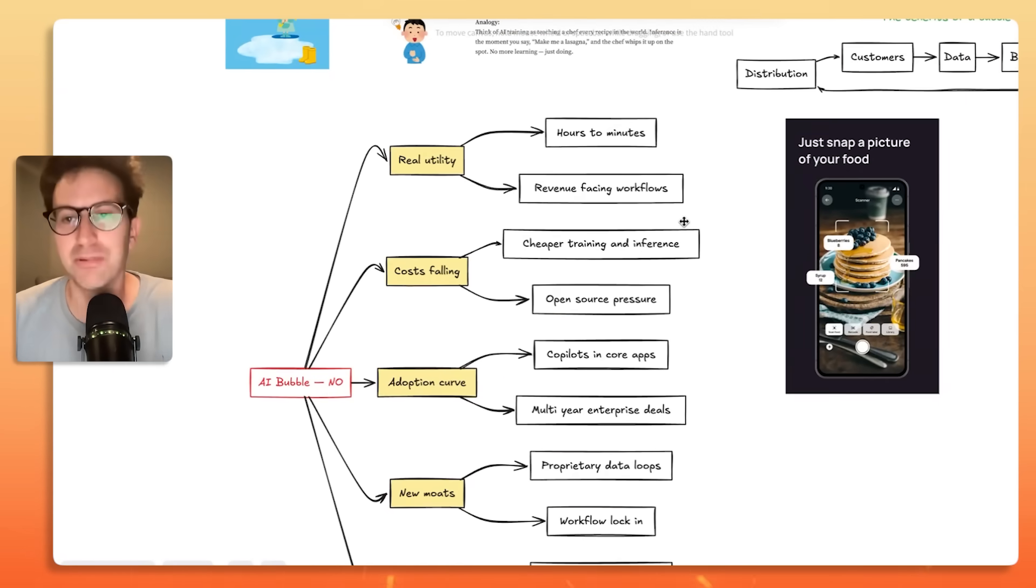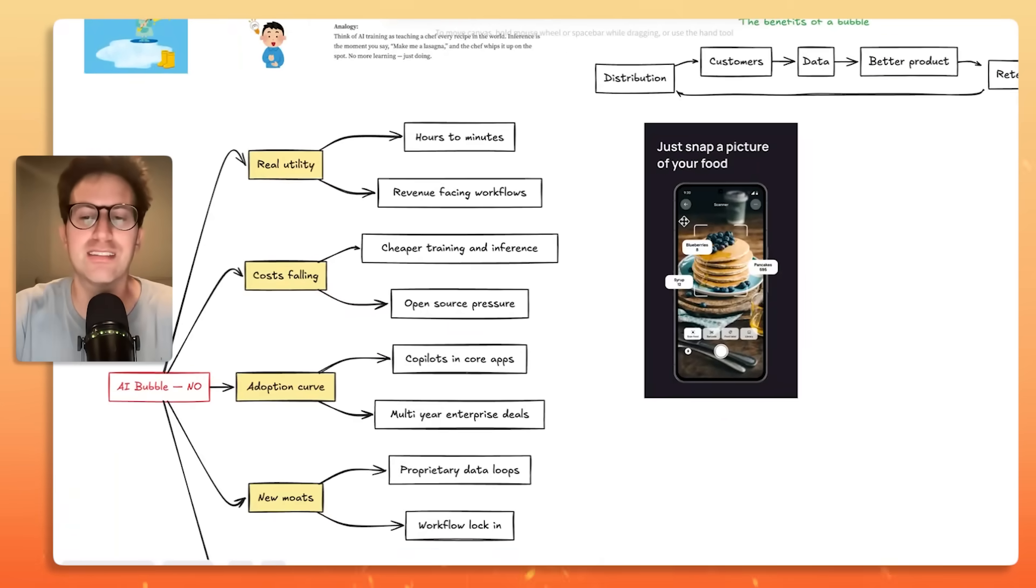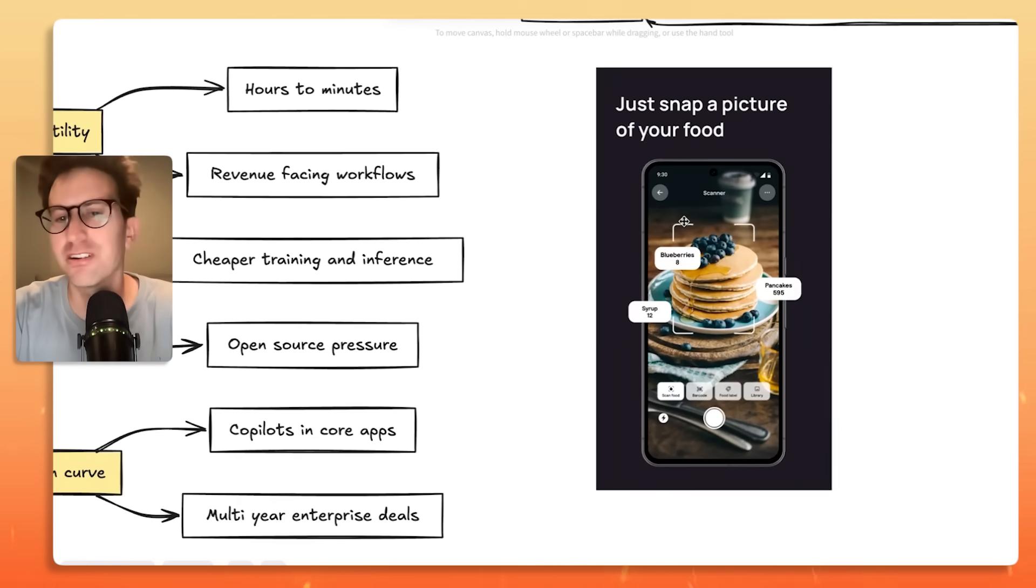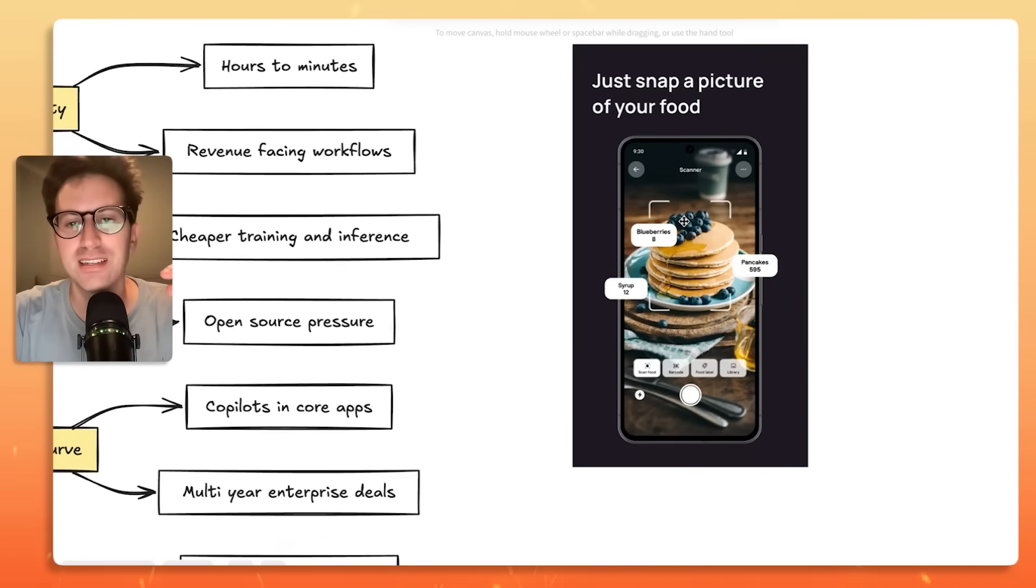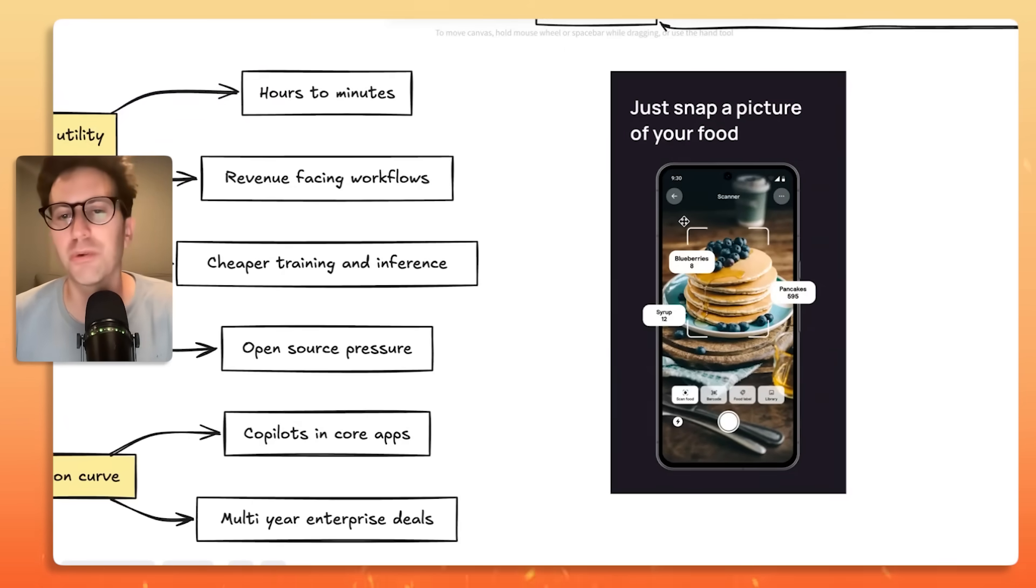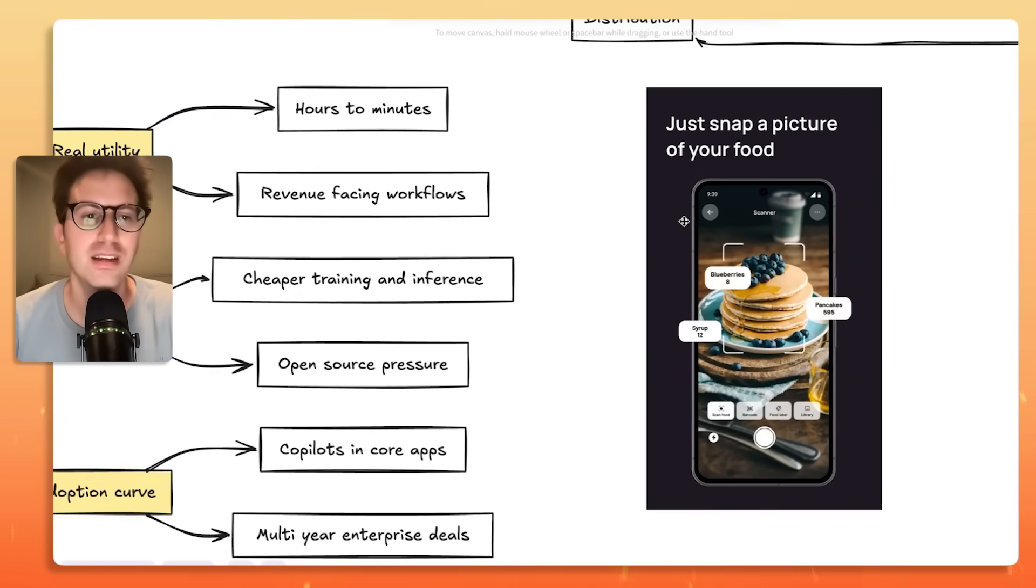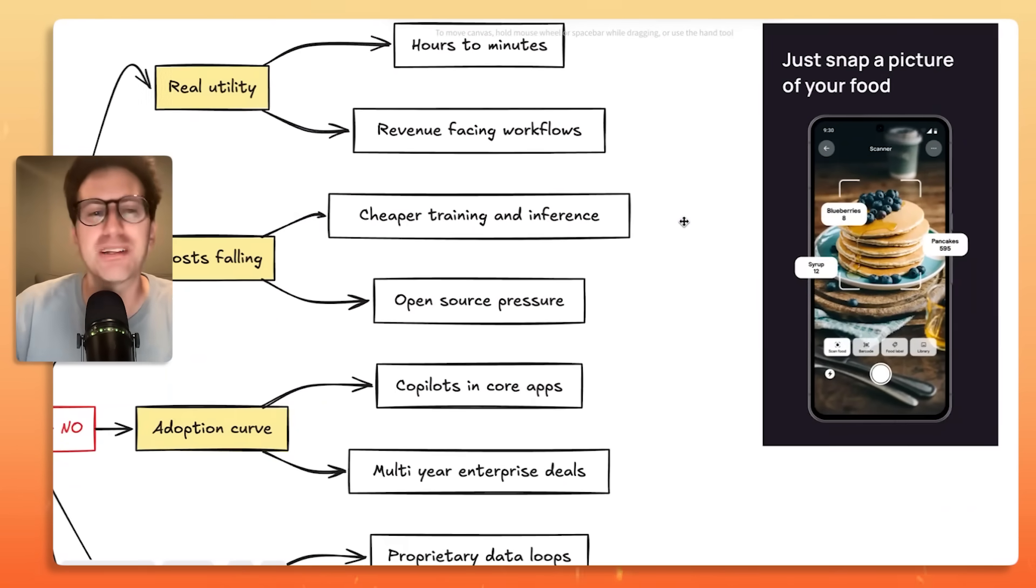Like people are actually implementing this in their workflows. It's helping them save time and money. The greatest example, one of the great examples of real utility is the CalAI guys, who I think are doing $2 million plus MRR. In the past, if you wanted, I'm sure a lot of you know CalAI, it tracks your calories for food. Now you just take a photo with AI and it basically tells you how many calories. It obviously makes the workflow a lot simpler. So there's real utility there. There's real time savings. So how can it be a bubble?